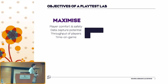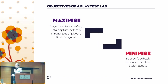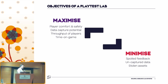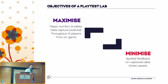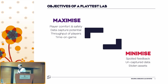We also want to minimize a few things: minimizing spoiled feedback — data that is biased beyond repair or incomplete — and minimizing uncaptured data, where we could have captured information about a player but lacked the capability. And lastly, stolen assets. The secretive nature of video games means we want to keep playtested assets secret, and the facility design has to accommodate that.